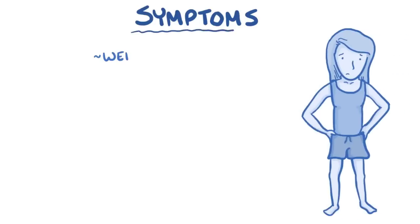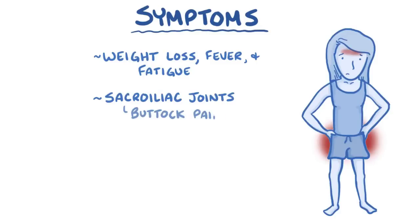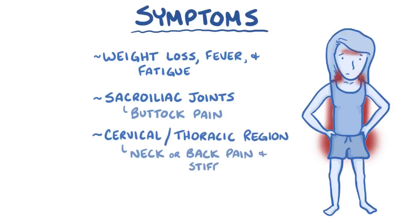Ankylosing spondylitis is a systemic inflammatory disease, so it can cause symptoms like weight loss, fevers, and fatigue. If ankylosing spondylitis affects the sacroiliac joints, it typically causes buttock pain, and if it affects the cervical or thoracic region, it can cause neck or back pain and stiffness. Because the ribs and vertebrae are involved in breathing, stiffness can cause shortness of breath.